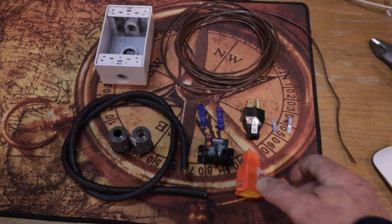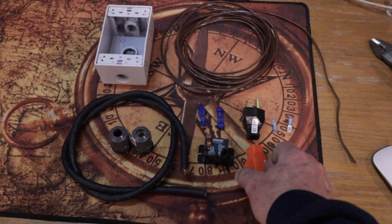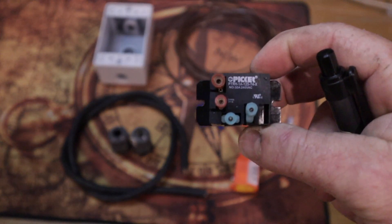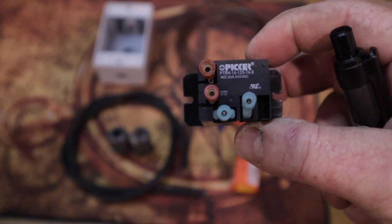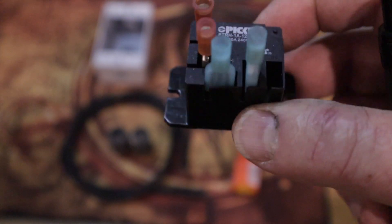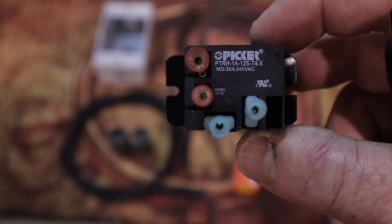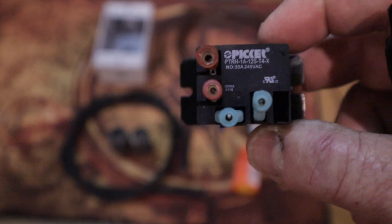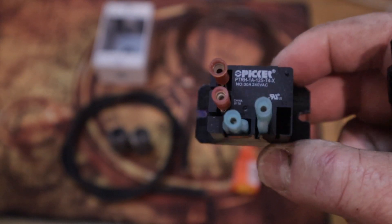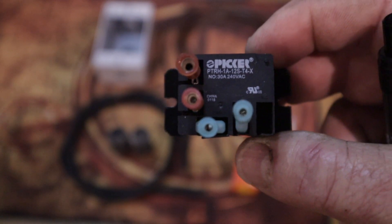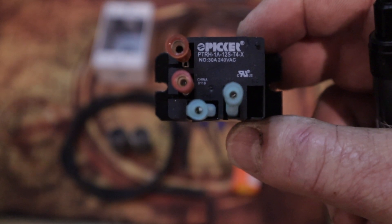So what you're going to need for this project, you're going to need both a male and female extension cord end. You'll need a low voltage controlled 120 volt AC control relay PTRH1A125T4X. I'm going to include a link to purchase off Amazon. My purchase came in pairs.